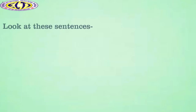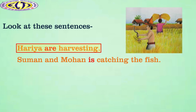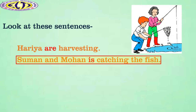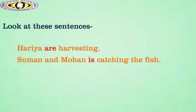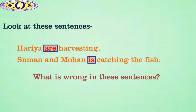Look at these sentences. Hariya are harvesting. Suman and Mohan is catching the fish. Can you tell me what is wrong in these sentences? Right, in these sentences, the verbs do not agree with the subjects.